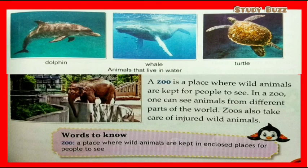Dolphins, whales, and turtles live in water. A zoo is a place where wild animals are kept for people to see. In a zoo, one can see animals from different parts of the world. Zoos also take care of injured wild animals.